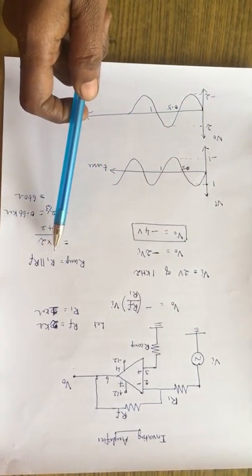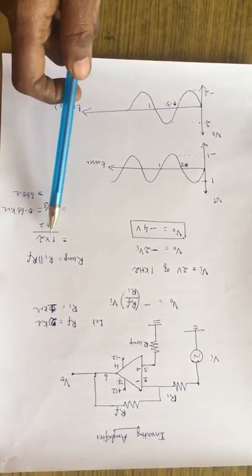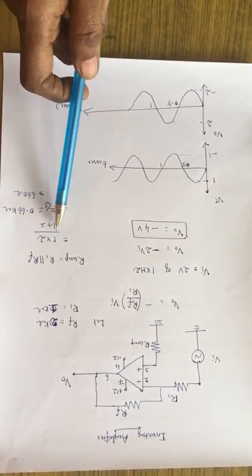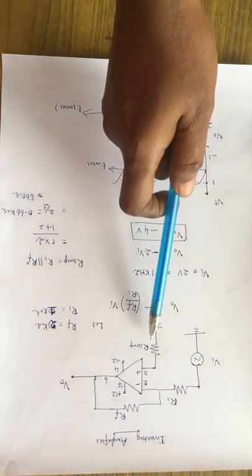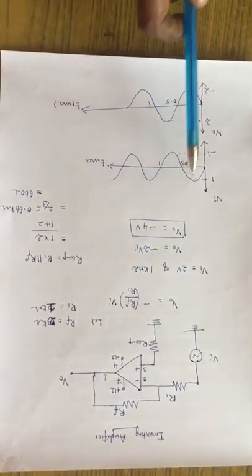The R compensation is R1 parallel with RF. That is parallel combination of 2 kilo ohm with 1 kilo ohm. It provides the resistance value of 660 ohm. It is connected at the pin number 3.